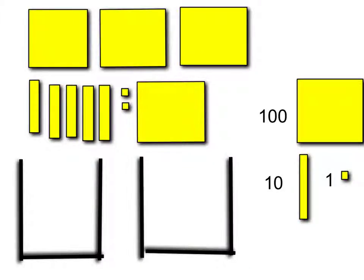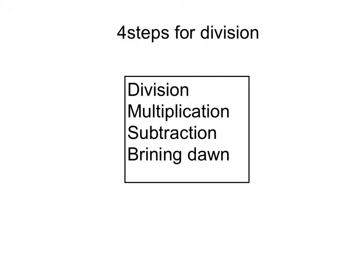There are four hundreds, five tens, and two ones, and I'm going to divide it into two groups. Before I start dividing, there are four steps for division: first is division, second is multiplication, third is subtraction, and fourth is bringing down.